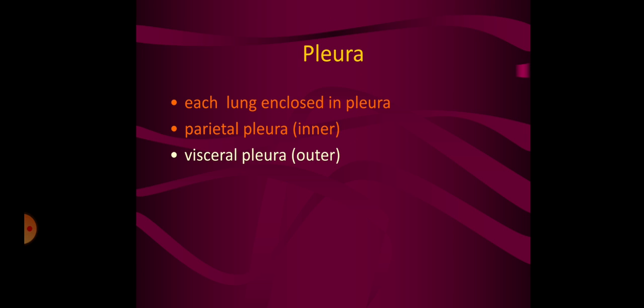Each lung is enclosed in pleura. The parietal pleura is found on the inner side and the visceral pleura is found on the outer side. There is a pleural space called the pleural cavity which contains lubricating fluid.